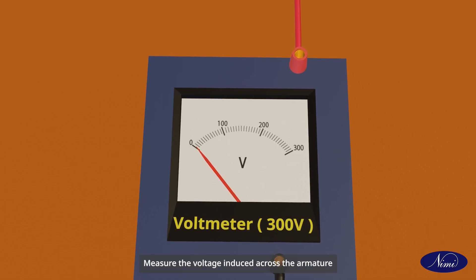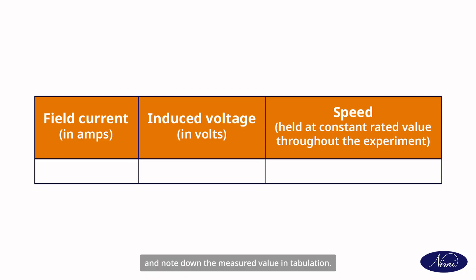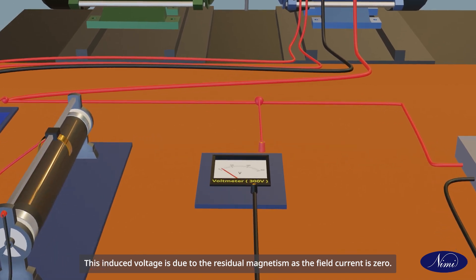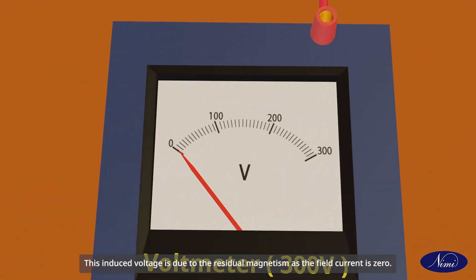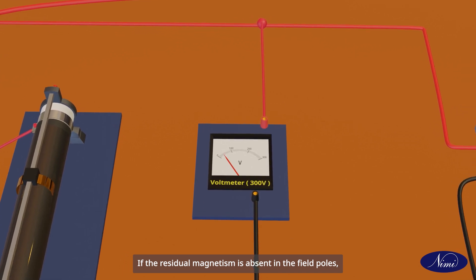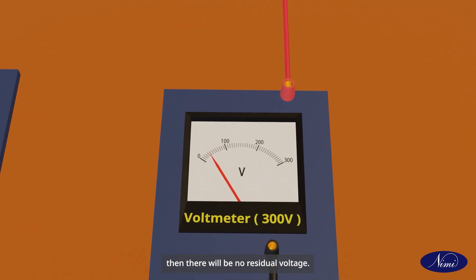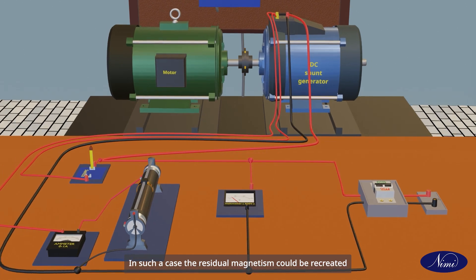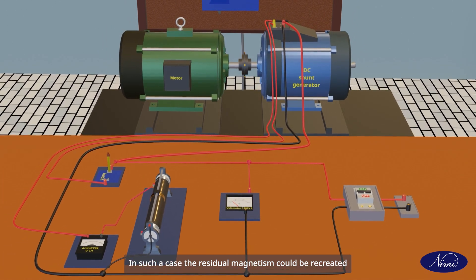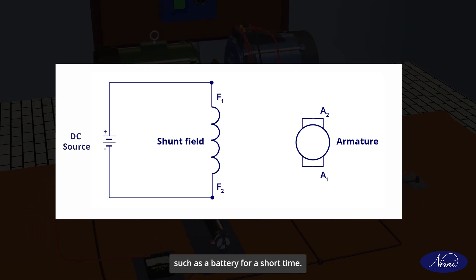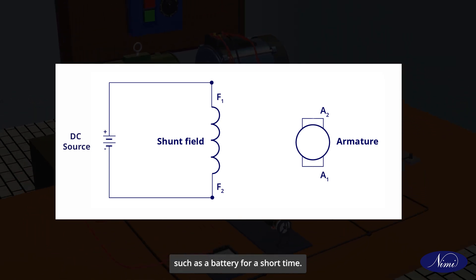Measure the voltage induced across the armature and note down the measured value in tabulation. This induced voltage is due to the residual magnetism, as the field current is zero. If the residual magnetism is absent in the field poles, there will be no residual voltage. In such a case, the residual magnetism could be recreated by connecting the field winding to a DC source, such as a battery, for a short time.